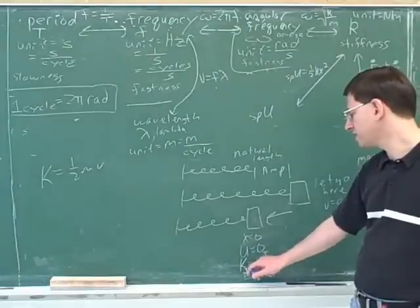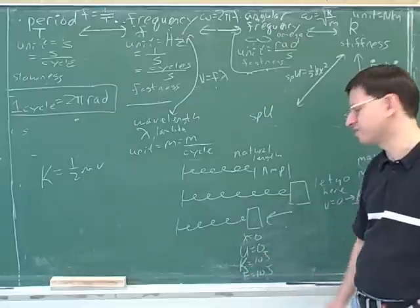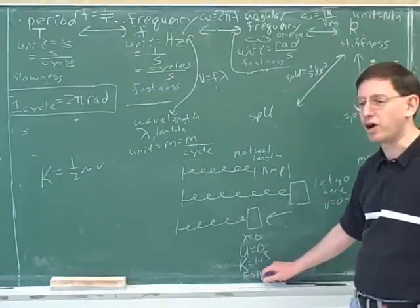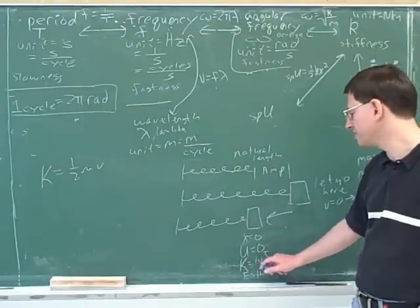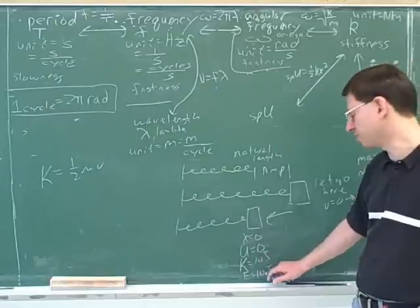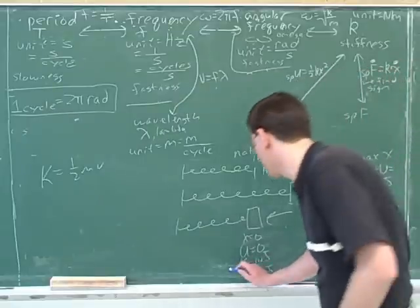Would you say that the kinetic energy here is at a maximum, a minimum, or intermediate? Because we put all the energy into it. There's no way the kinetic energy could be 11 joules, right? Because we only have 10 joules. So this is the maximum kinetic energy.